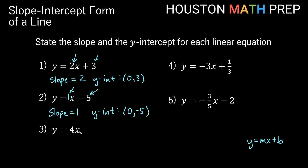y equals 4x — that's the same as having y equals 4x plus what? Plus nothing, plus 0. So here we have an m of 4, so our slope is equal to 4.